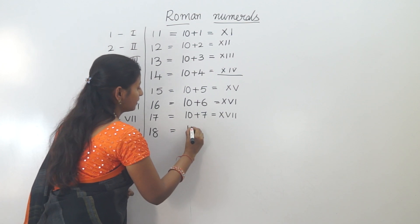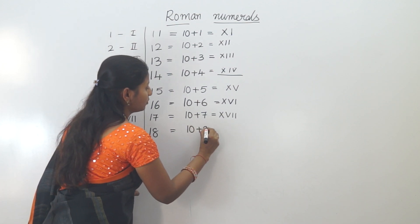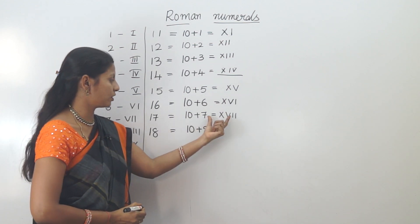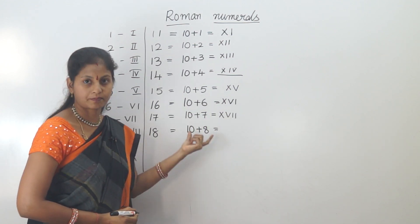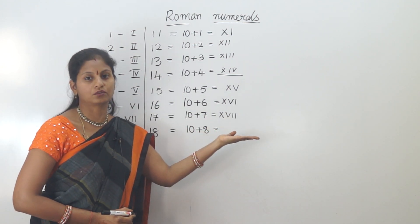Eighteen means 10 plus 8. You can always convert an Arabic number to a Roman number — it is easy to do.